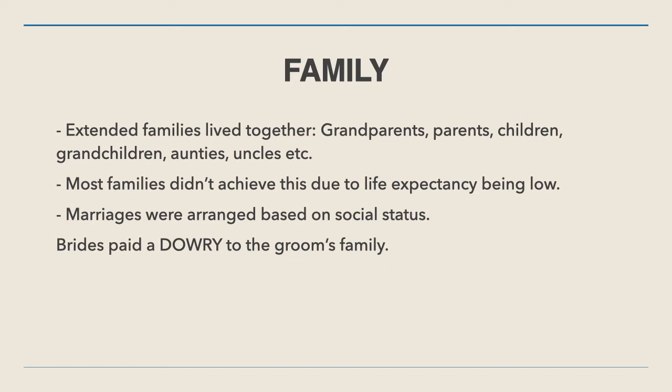Marriages were typically arranged, which means the parents decided who was going to marry whom. Even when the children were quite young, parents would decide who you were going to marry, and this would be based on social status. So if you came from a family of shoemakers, for example, you'd probably marry someone from another family of shoemakers. Brides to this day still pay a dowry, which is basically a payment to the groom or the groom's family in exchange for his hand in marriage.